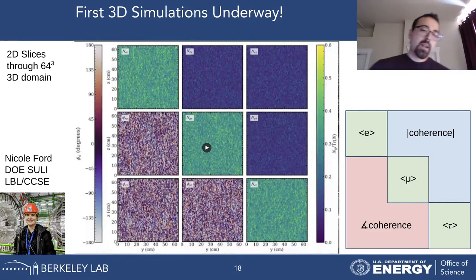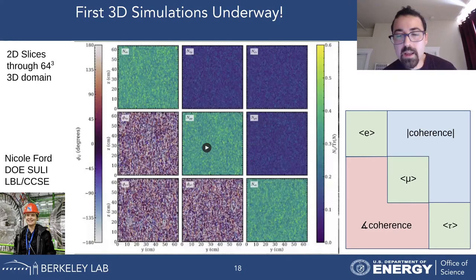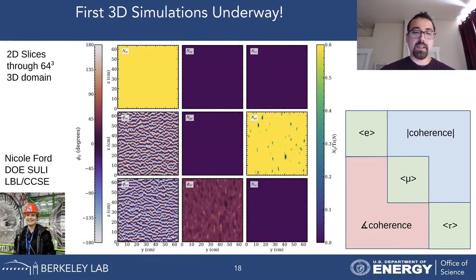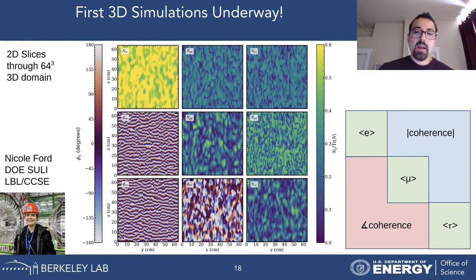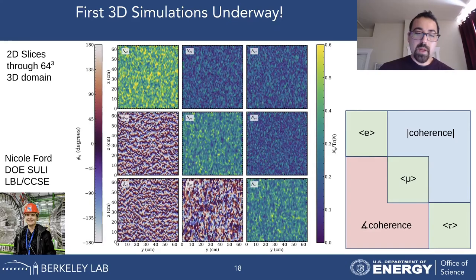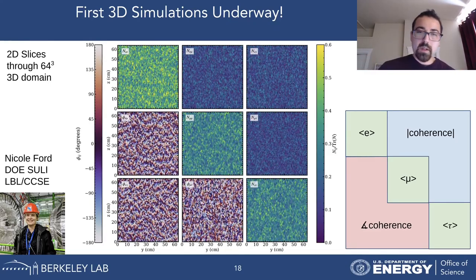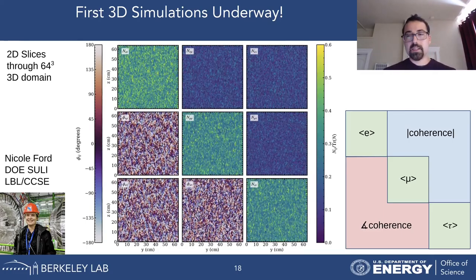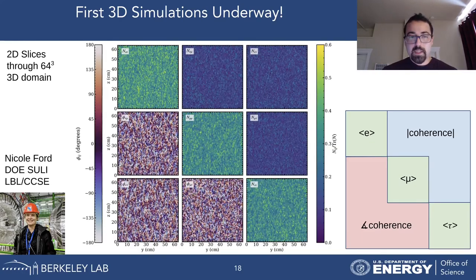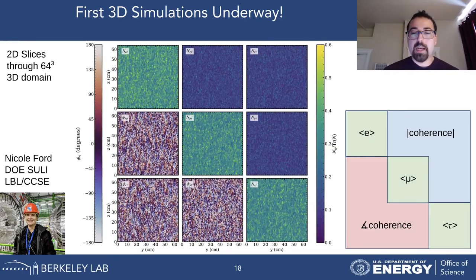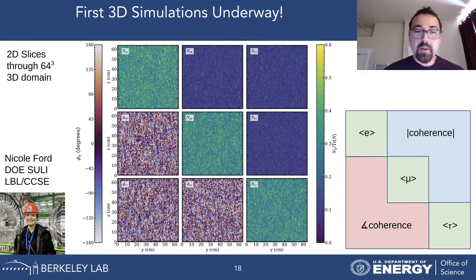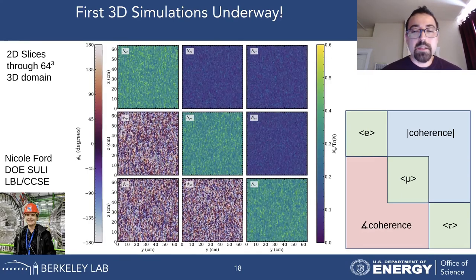We have also begun simulating the fast flavor instability in three dimensions. Shown here is an animation where the diagonal represents occupation probabilities for 2D slices in a 3D domain, off-diagonals represent quantum coherence terms between flavors, upper off-diagonals are magnitudes, and lower off-diagonals are complex phases. Again, an initially pure electron flavor state quickly transitions to a mixture of electron, muon, and tau flavor states, and after saturation all structure consists of fine-scale fluctuations around an equilibrium value.